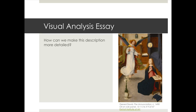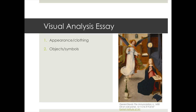How can we make this description more detailed? Here are some things to think about. Appearance and clothing — how do the figures appear, what are they wearing? Objects and symbols — there are lots of objects in this room, some of them are symbolic. Actions and gestures — how are the figures relating to one another? And finally, the setting and space — where are they and what kind of space is it?